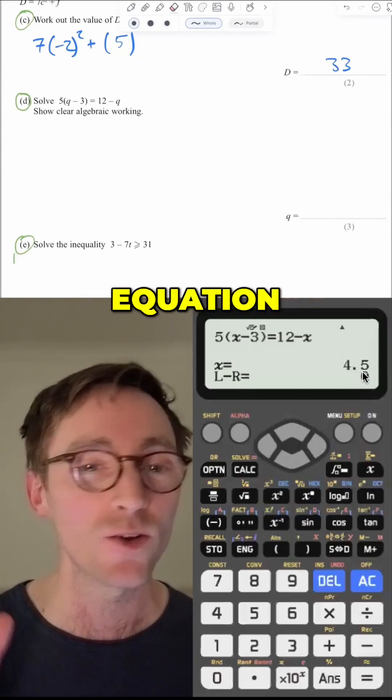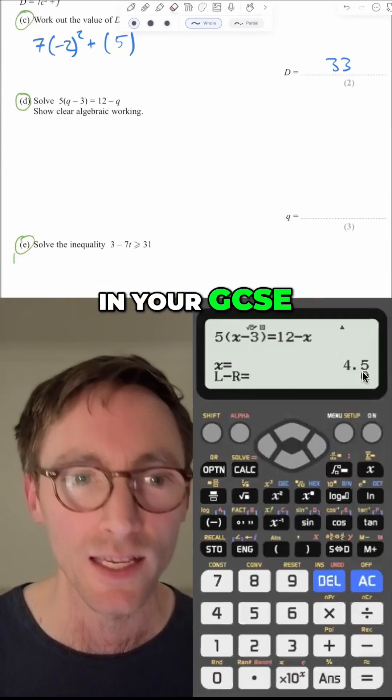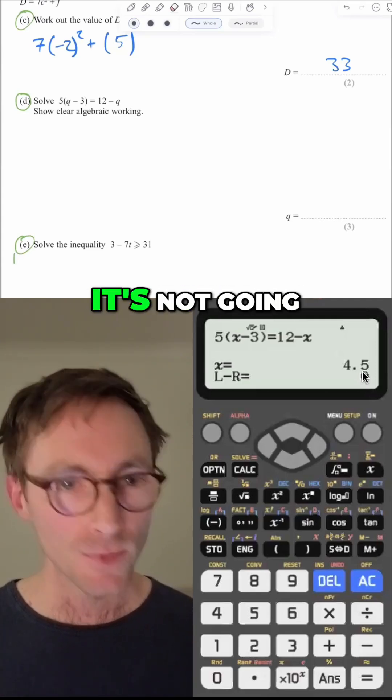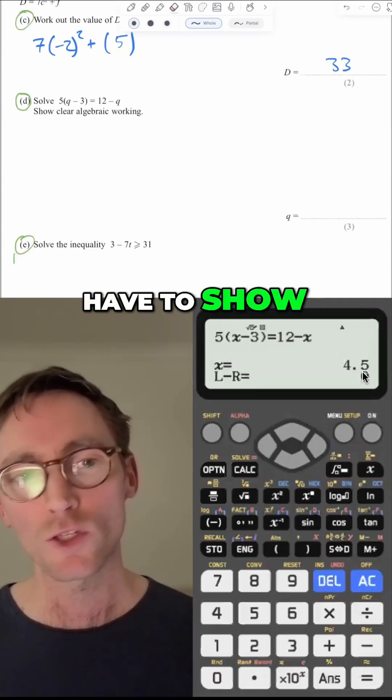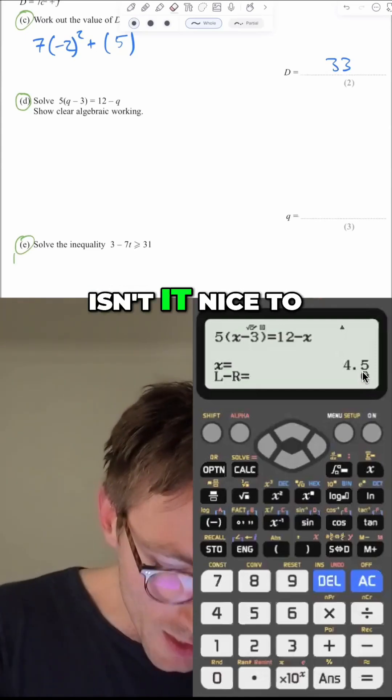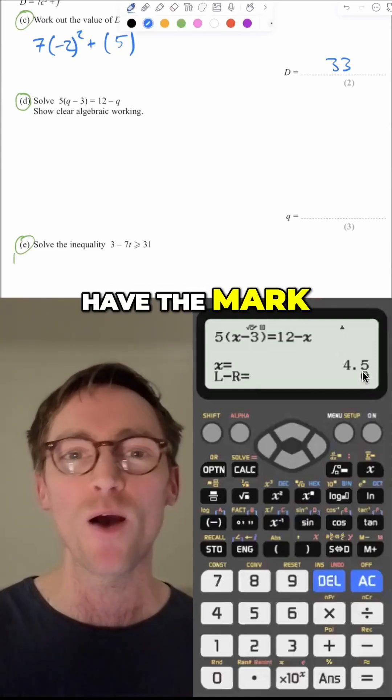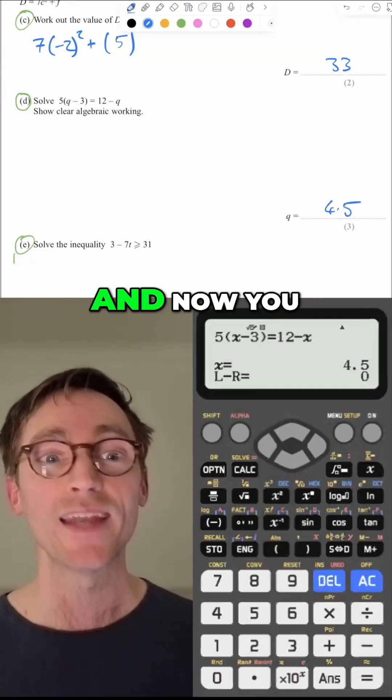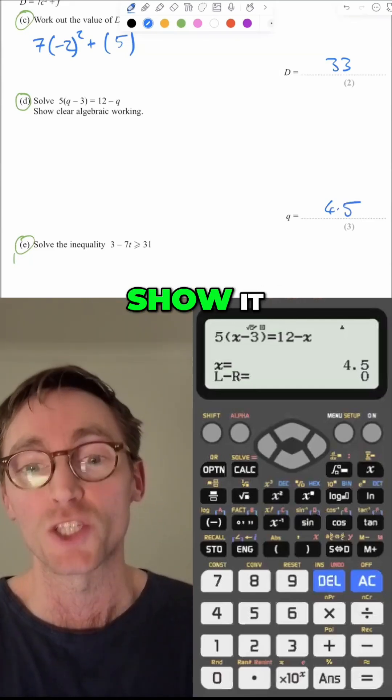You can literally do this on any equation in your GCSE and it's not going to get you full marks every time because you have to show some working sometimes. But isn't it nice to essentially have the marks key on you? Again, you stick the answer there, 4.5, and now you go back and try and show it.